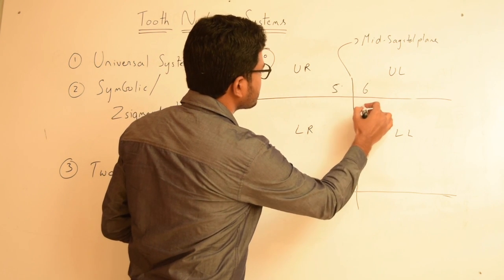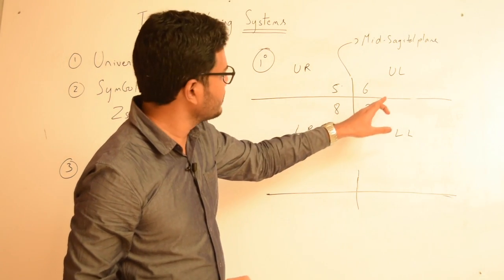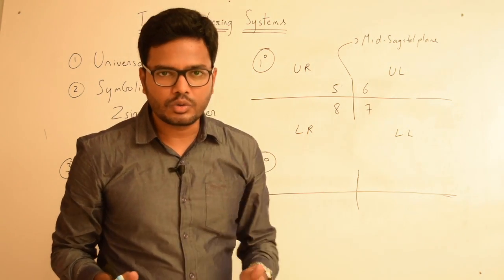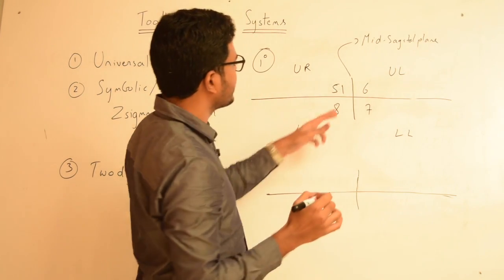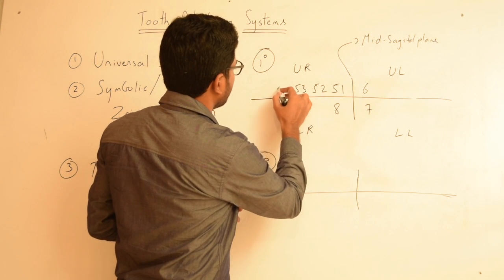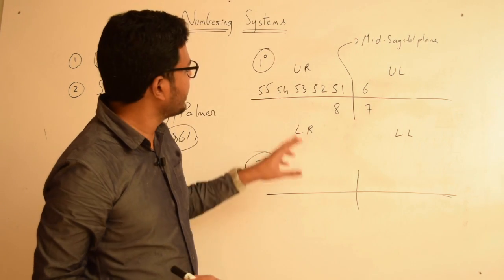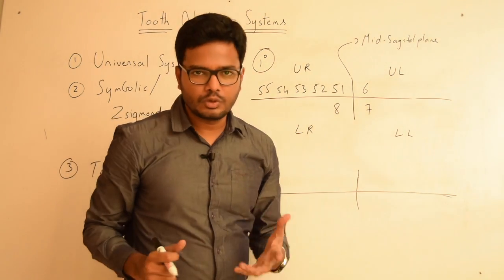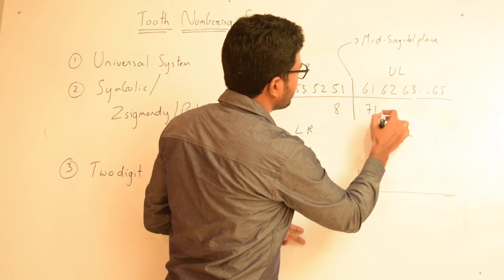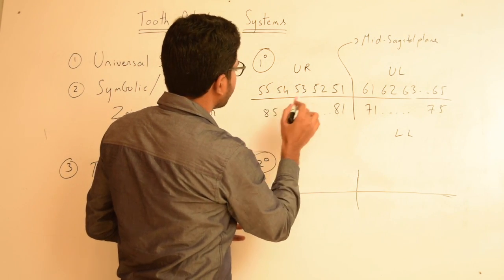In case of primary dentition, we use the following numbers to represent the quadrants: 5 represents the first quadrant, 6 the second quadrant, 7 the third, and 8 the fourth quadrant. A second number represents a particular tooth — so 51 indicates the first tooth, the central incisor, then 52, 53, 54, and 55. We then have 61 to 65, 71 to 75, and 81 to 85.